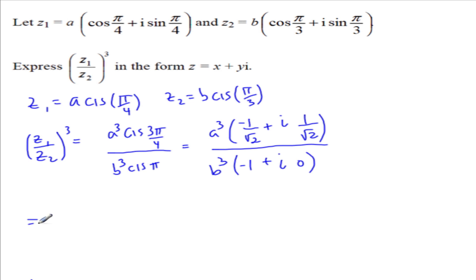So this will simplify to A cubed over B cubed, and then the minus and the minus will cancel, and I'll be left with divide root 2, and then the minus will go here. We'll get minus A cubed over root 2 B cubed I, and there's your answer. Not the prettiest answer, but that's it.